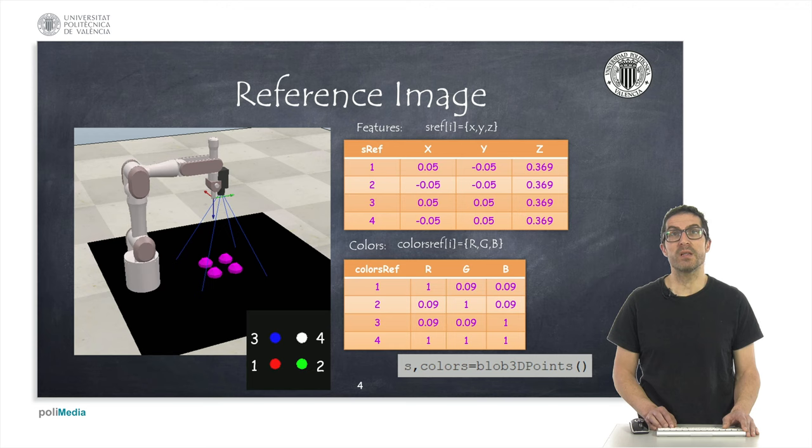And as a result, we will be able to get a list of features and their colors that will be used as reference values. Using this image processing algorithm, we will be able to detect features from actual images. So, the idea is to use them,